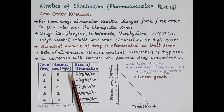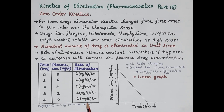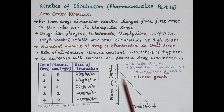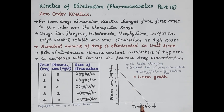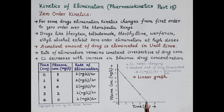At the fourth hour, 2 mg/L of drug is eliminated and the plasma concentration becomes 0 — since 2 minus 2 equals 0 — and the rate of elimination again remains constant. So here the plasma concentration reaches zero. If we plot these values in a time versus plasma concentration graph, we get a linear graph. At time 0: 8 mg/L; at 1 hour: 6 mg/L; at 2 hours: 4 mg/L; at 3 hours: 2 mg/L; at 4 hours: 0 mg/L. Very importantly, a linear graph is obtained for drugs eliminated by zero order kinetics.